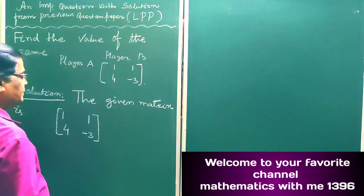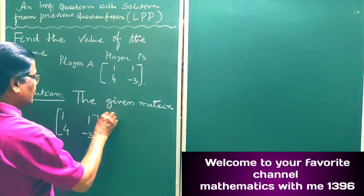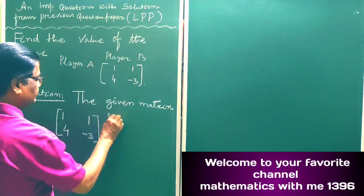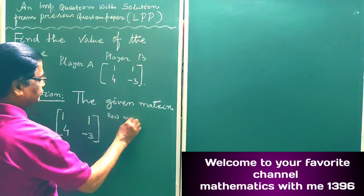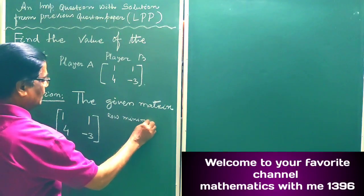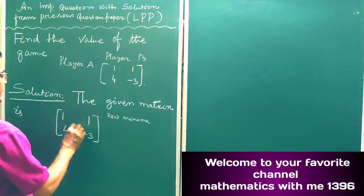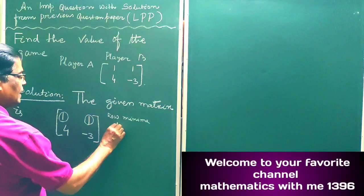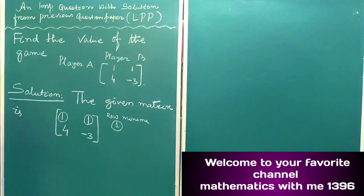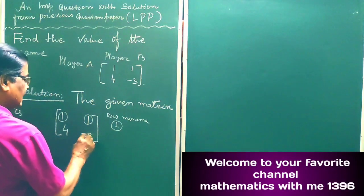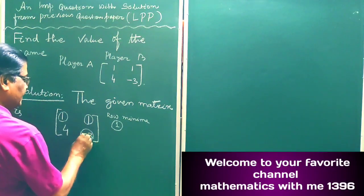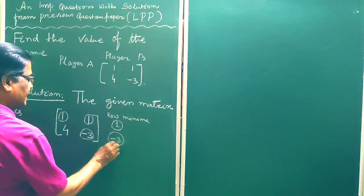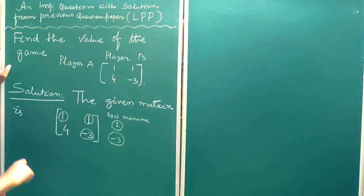First of all, we have to find row minima. In the first row, the minimum element is 1, so here we can write 1 within a circle. In the second row, the minimum element is minus 3, and here we can write it in a circle.